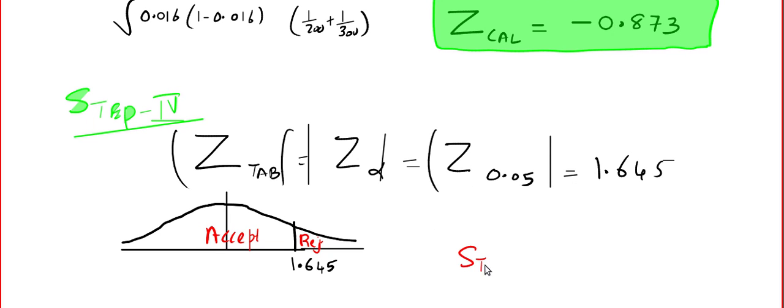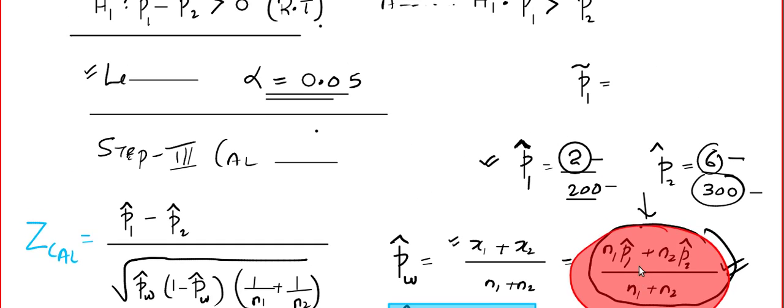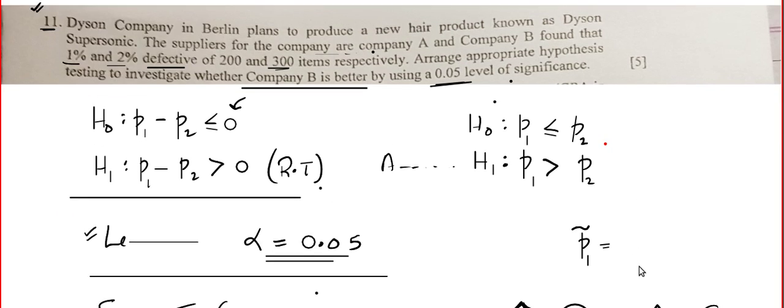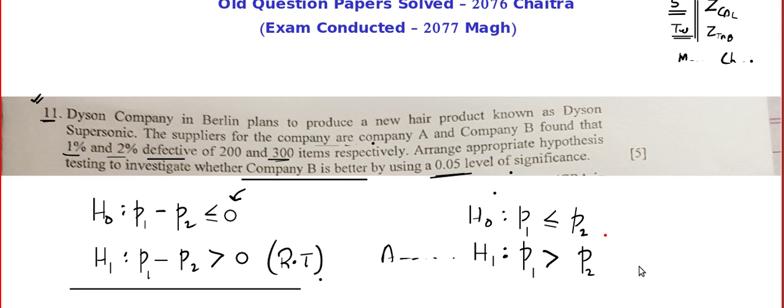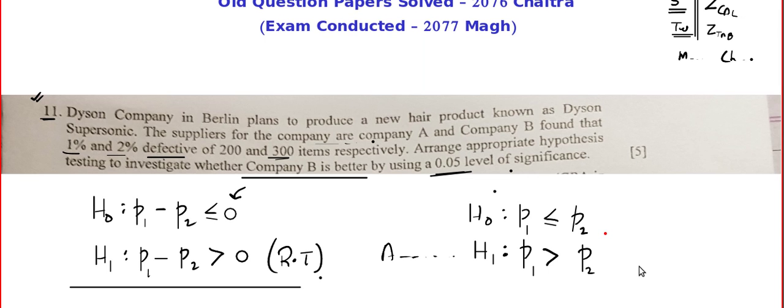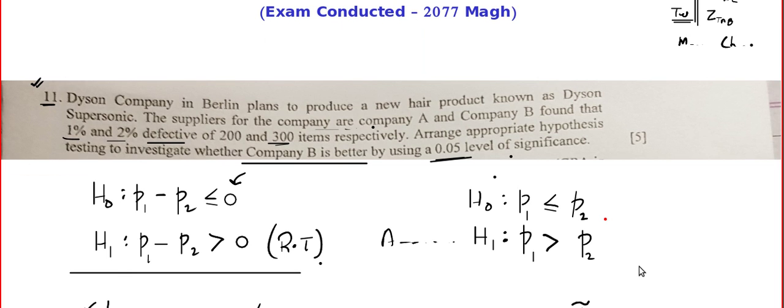Step number 5 is the decision making step. Minus 0.873. That is in acceptance region. So accept H naught. That is, we are 95 percent confident there is no evidence to prove that Company B is better than Company A. We are 95 percent confident that there is no evidence to prove that Company B is better than Company A.